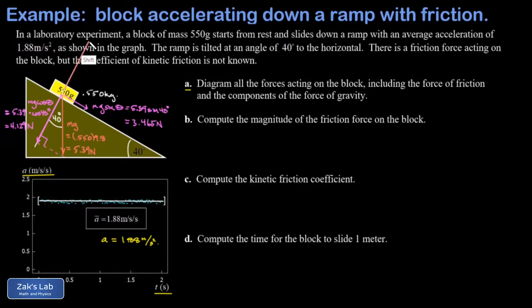There's a normal force acting on the block perpendicular to the surface, exactly canceling the perpendicular component of gravity to keep the block moving along the surface rather than accelerating perpendicular to it. That normal force must have a magnitude of 4.129 newtons. My final force is the force of friction fk opposing the direction of motion, given by μk times the normal force — we don't know μk yet, that's question C. That completes the force diagram.